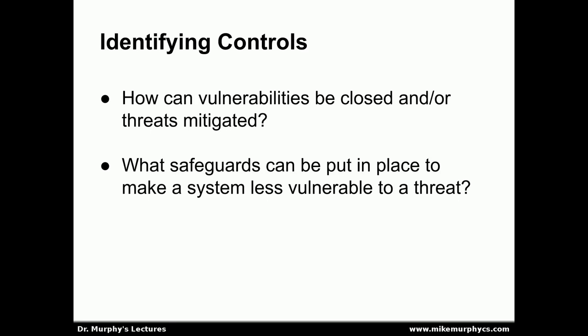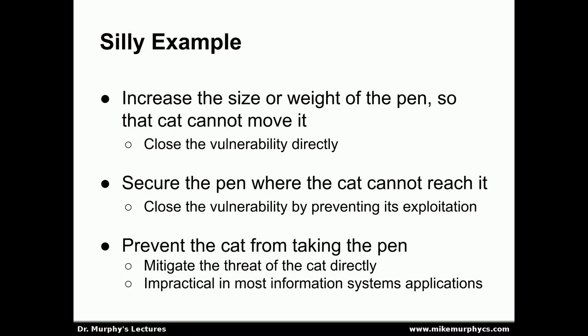There are a couple of ways that we could make the pen less vulnerable to the cat. One way is to increase the size or weight of the pen so that the cat couldn't move it — we could make the pen four feet long and weigh twenty pounds, and then the cat wouldn't be able to move it. That would be a way of directly closing the vulnerability. Unfortunately, it would be fairly difficult to write with a twenty-pound, four-foot-long pen. We could also secure the pen where the cat couldn't reach it, closing the vulnerability by preventing its exploitation.